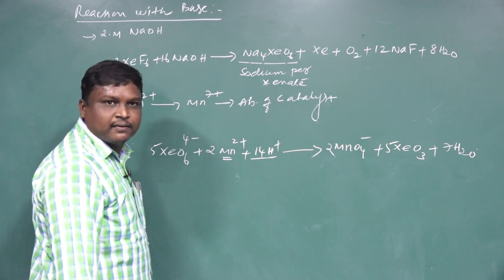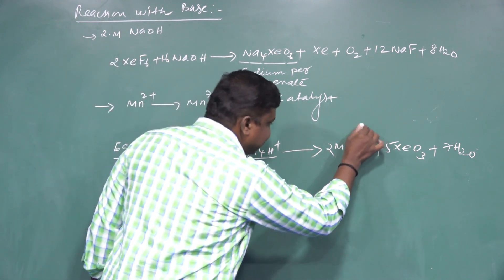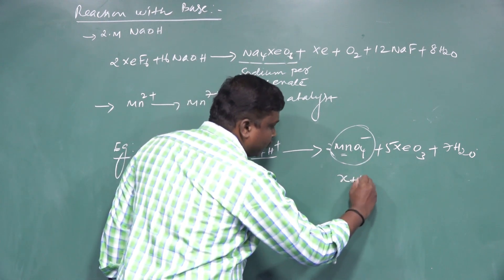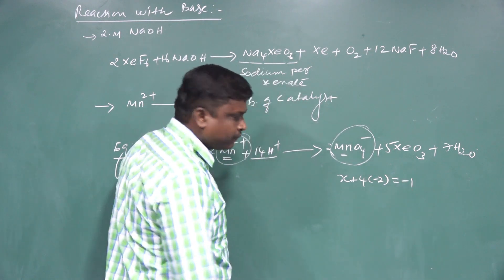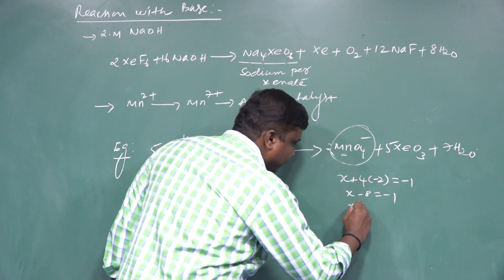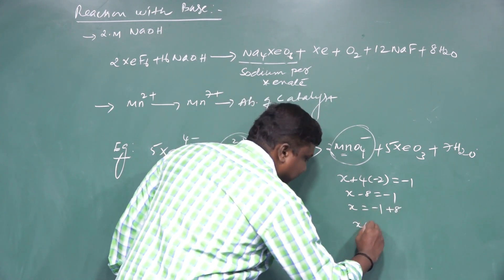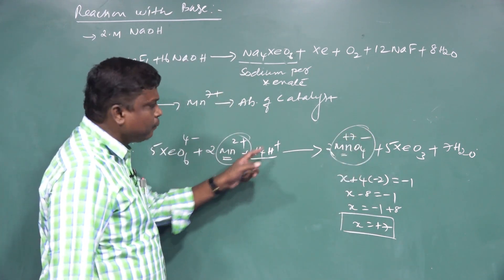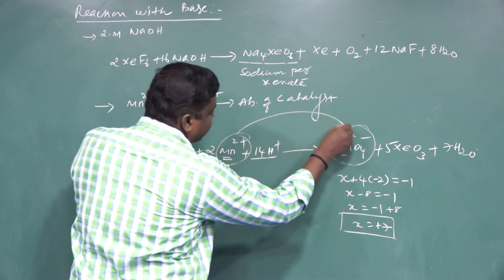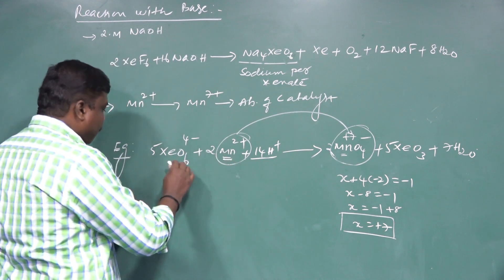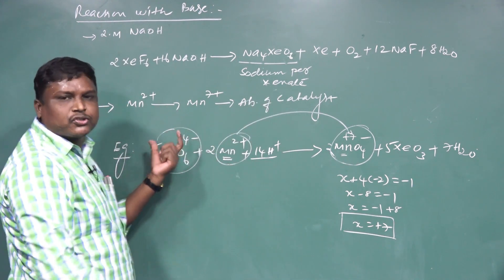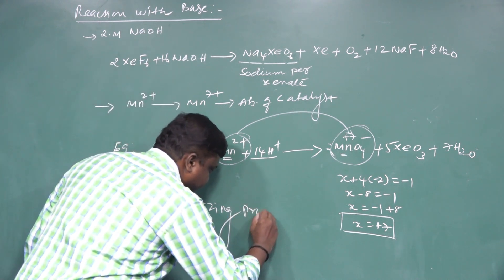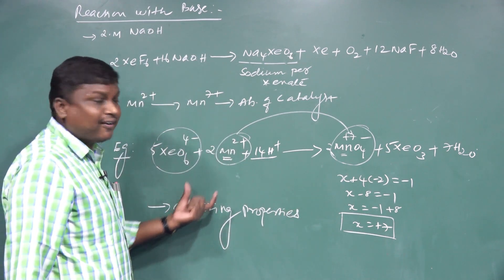Considering Mn2+ converted to Mn7+: to calculate the oxidation state of Mn in permanganate, x + 4×(−2) = −1, so x − 8 = −1, x = +7. So Mn is in the +7 oxidation state, and the role of perxenate ion is to act as a powerful strong oxidizing agent, in the absence of a catalyst.